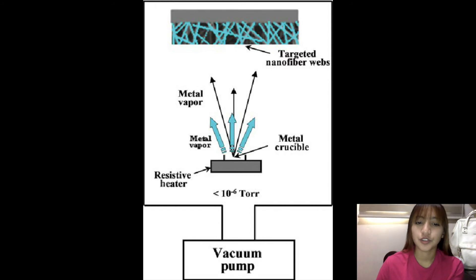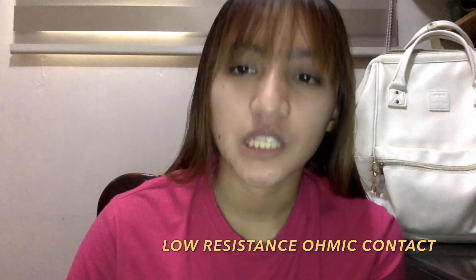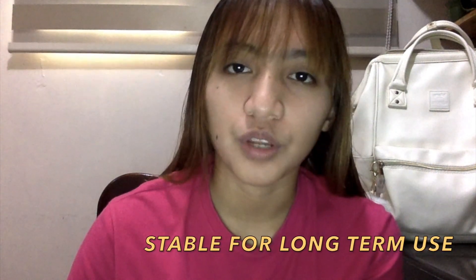This picture shows how metallization occurs. It can be seen that it provides contacts and interconnections. It is also important to take note that in metallization, materials should have low resistivity and form low resistance ohmic contacts.